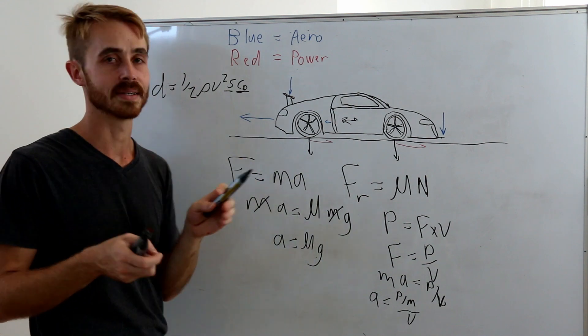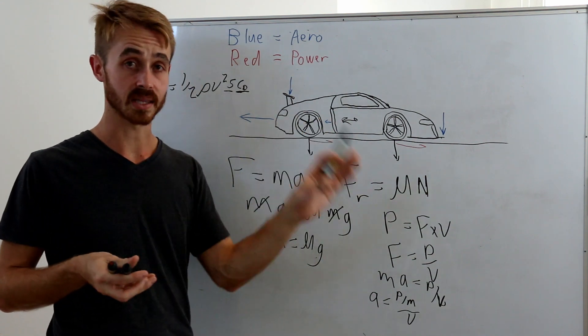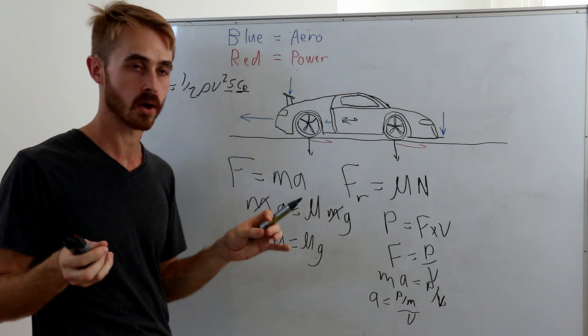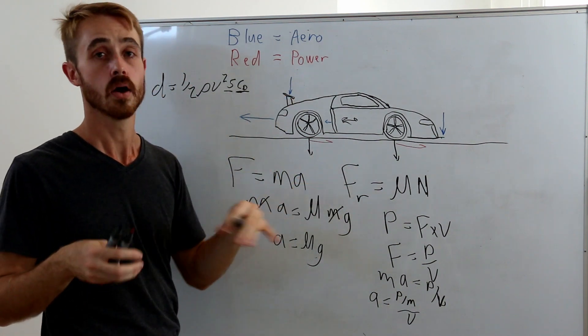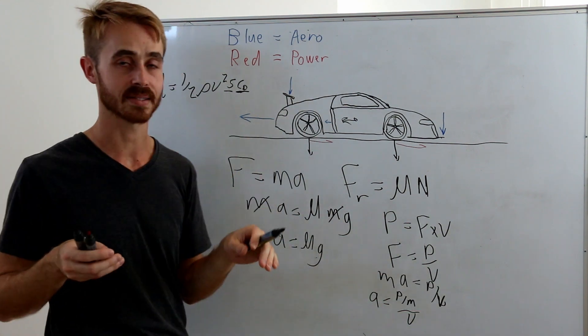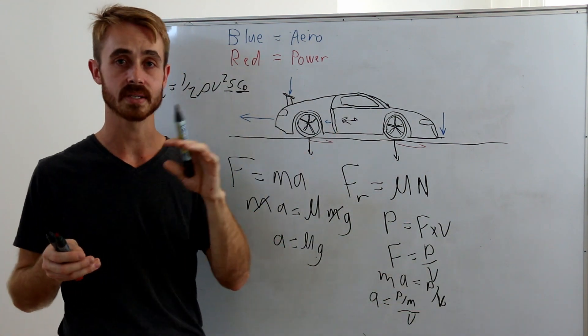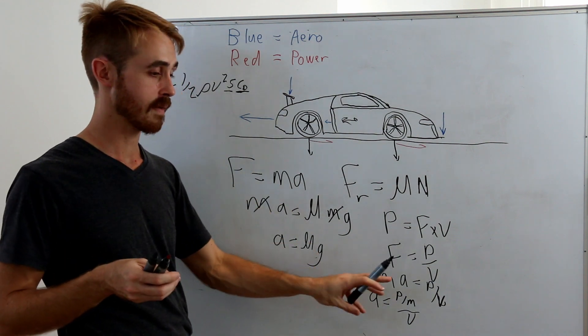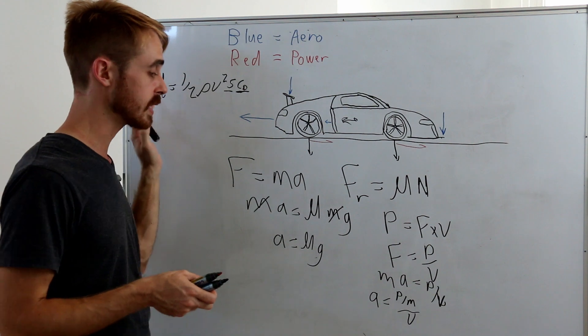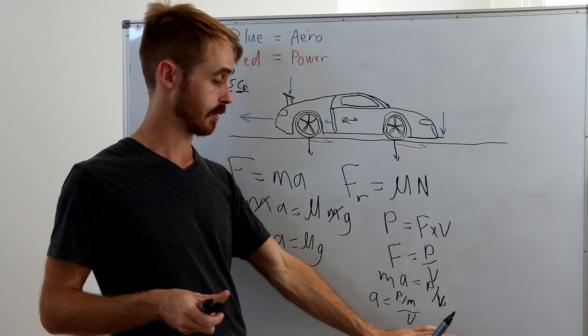What we end up with is that the car that's lighter with less power has a higher component of drag on it than the car that's heavier. Well, they both got exactly the same component of drag—we just assume cD is the same—but because the car weighs half as much and has half as much power, the drag component is a far more significant portion of the power than it is of a car with 1000 horsepower.